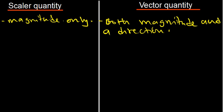What are the examples of scalar quantity? Any physical quantity which has got only magnitude — we can think of time. When we say it's 12 hours, you cannot say 12 hours east or 12 hours south or 12 hours at an angle of 30 degrees. So that is a scalar quantity — it has got only magnitude but no direction.